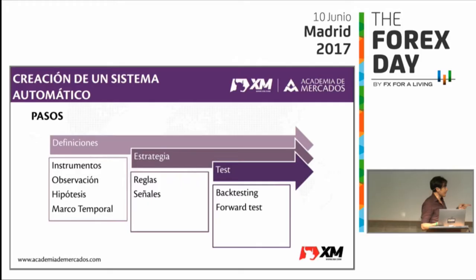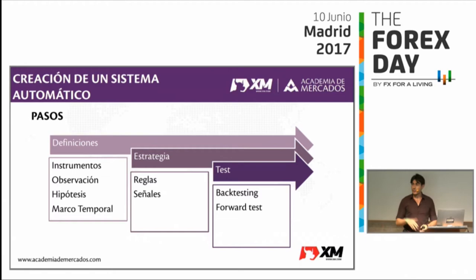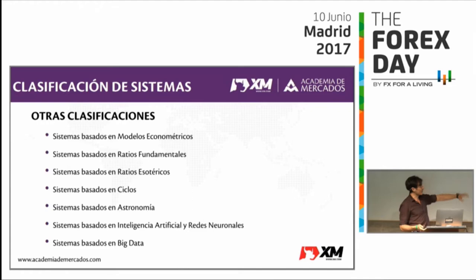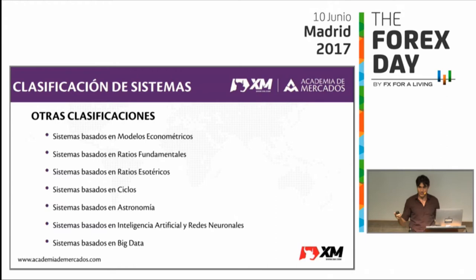Tenemos que definir sobre qué instrumento queremos operar, sobre qué divisa, sobre qué marco temporal, si queremos intradiario o diario, si queremos una estrategia tendencial o contrarian, o las dos. Hay muchísimos tipos: seguidores de tendencia, contratendencia, trading en rango, ruptura, ruptura inversa, reversión a la media, modelos econométricos. Si somos capaces de demostrar que históricamente algo ha pasado y el estudio es robusto, es decir, gana más veces de lo que pierde y cuando gana gana más y cuando pierde pierde menos, me sirve.